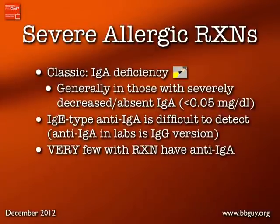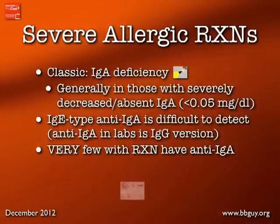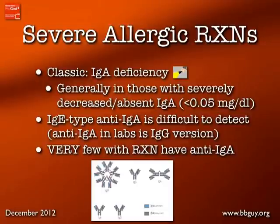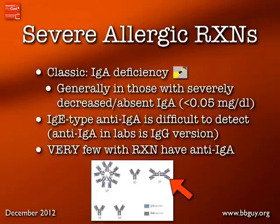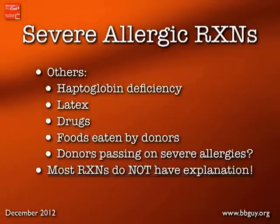The classic flashlight-in-the-eyes fact about severe allergic reactions is IgA deficiency. IgA deficiency occurs when someone essentially lacks IgA — a dimeric antibody found in secretions. While low IgA is fairly common, having essentially no IgA (below 0.05 mg/dL) is uncommon. In those patients, an IgE anti-IgA antibody can form, and re-exposure to IgA can cause anaphylaxis. The anti-IgA we can detect in labs is actually the IgG version and doesn't necessarily correlate. Very few patients with severe allergic reactions actually have anti-IgA.